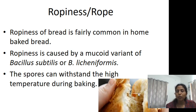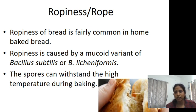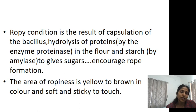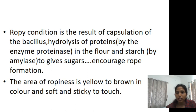Ropiness or rope formation — visible as a yellowish-brown discoloration — is fairly common in home-baked bread due to improper storage. Ropiness is caused by a mucoid variant of Bacillus subtilis or Bacillus licheniformis, whose spores can withstand the high temperature during baking. The rope condition results from capsulation of Bacillus and hydrolysis of proteins and starch in the flour to give sugars, creating the ropy formation. The affected area is yellow to brown in color and soft and sticky to touch.